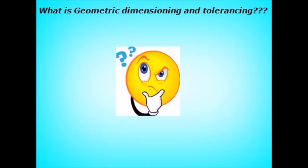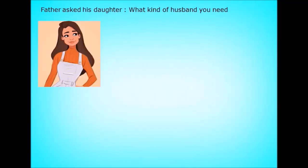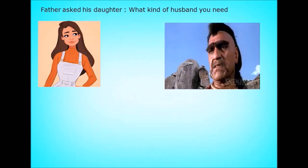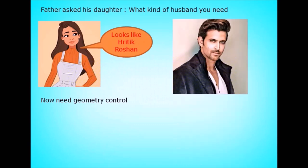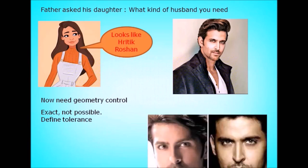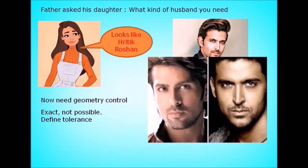The first question in GD&T is: what is GD&T? A father asked his daughter what kind of husband she needed. She told him he should be smart-looking. Amrish Puri from the movie Loha came and said 'I am smart' — but she said he needs geometric control. Then she said he should look like Hrithik Roshan. So you need to define some tolerances — if not exactly Hrithik Roshan, something close is okay.